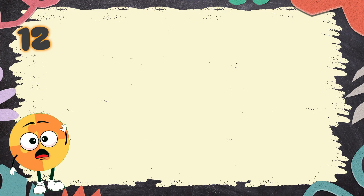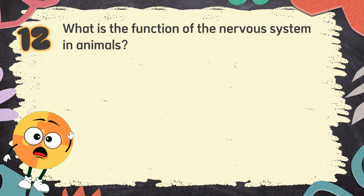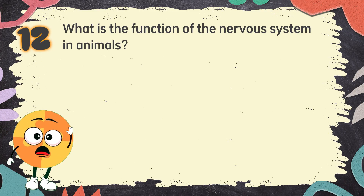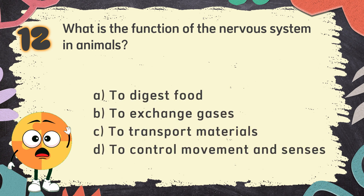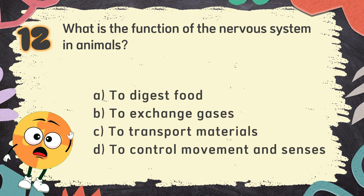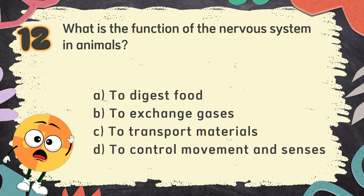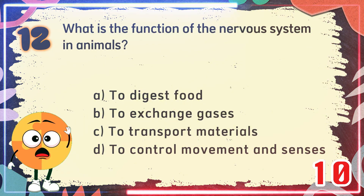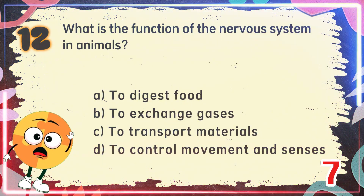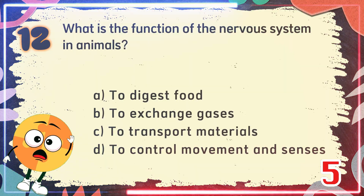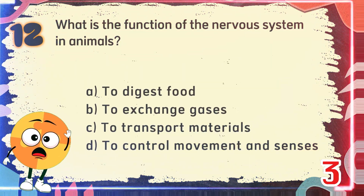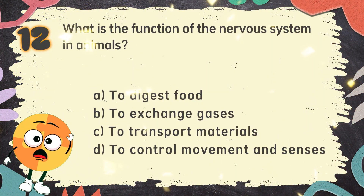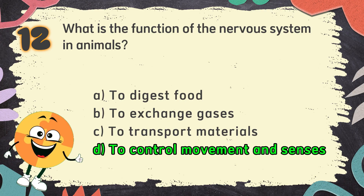Number 12. What is the function of the nervous system in animals? The choices are A. To digest food, B. To exchange gases, C. To transport materials, D. To control movement and senses. The correct answer is D. To control movement and senses.